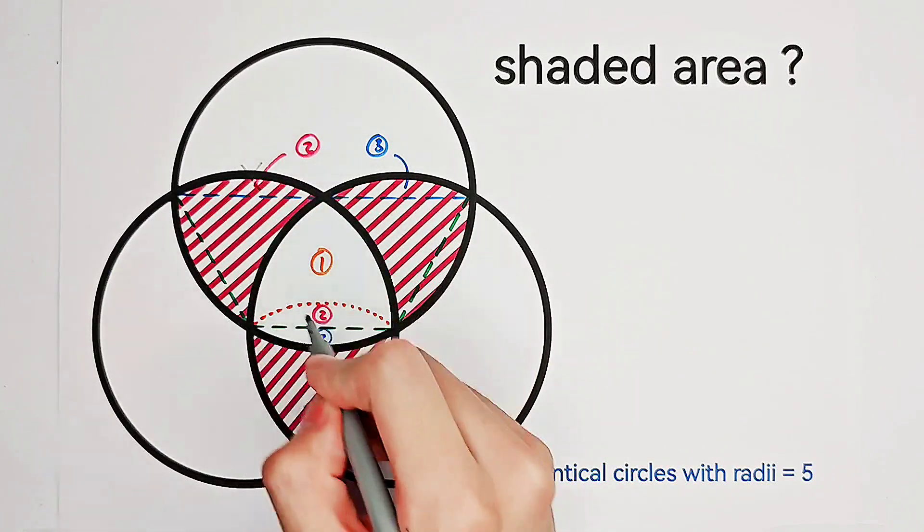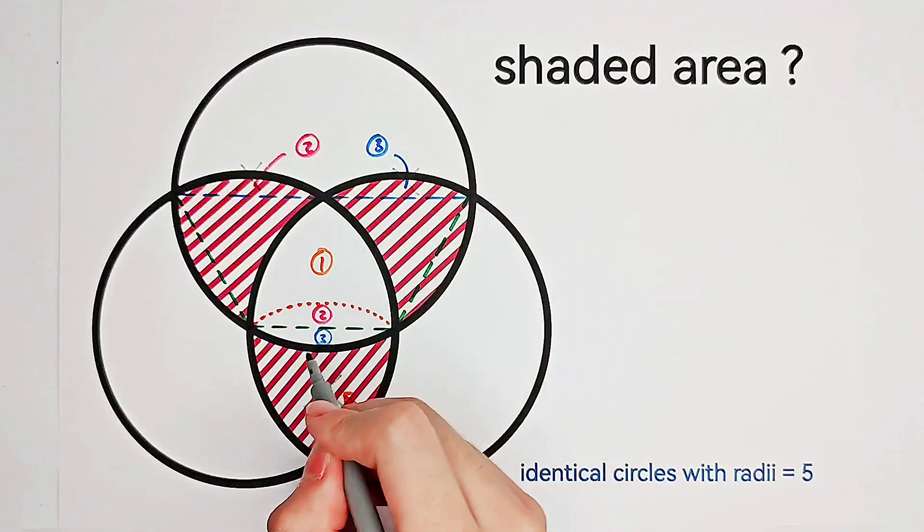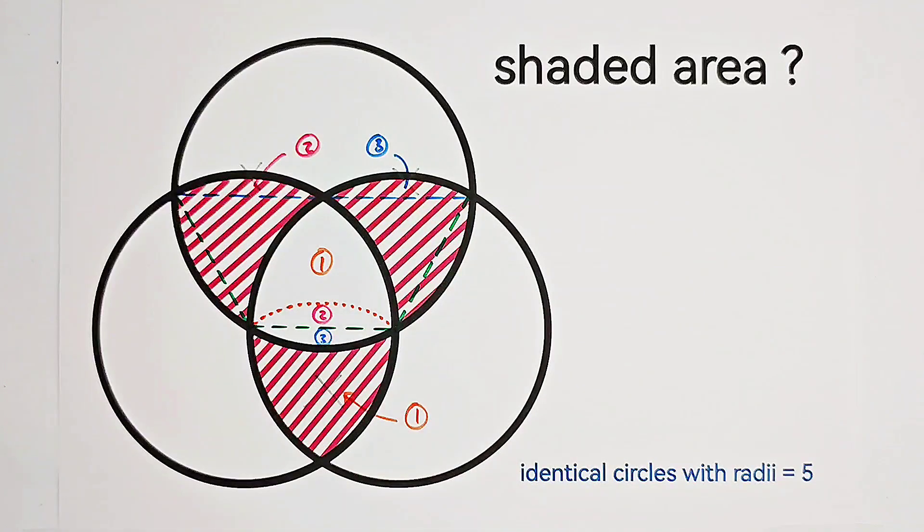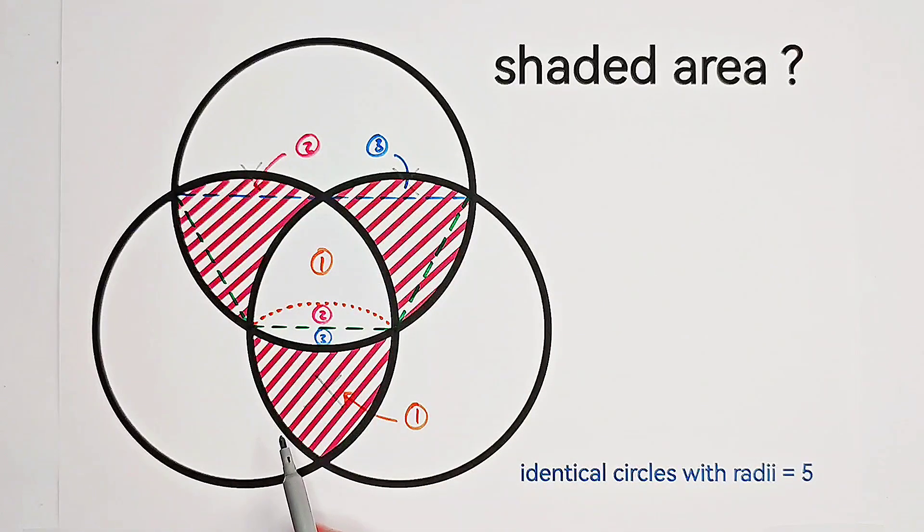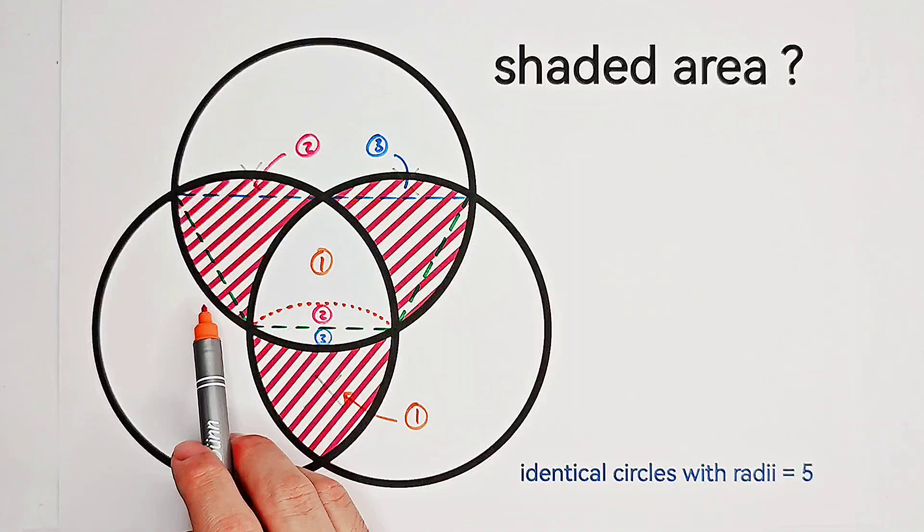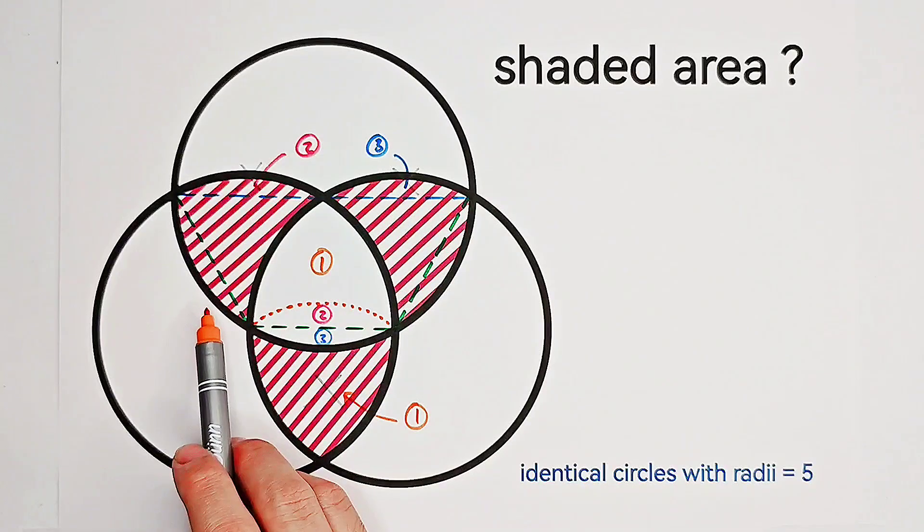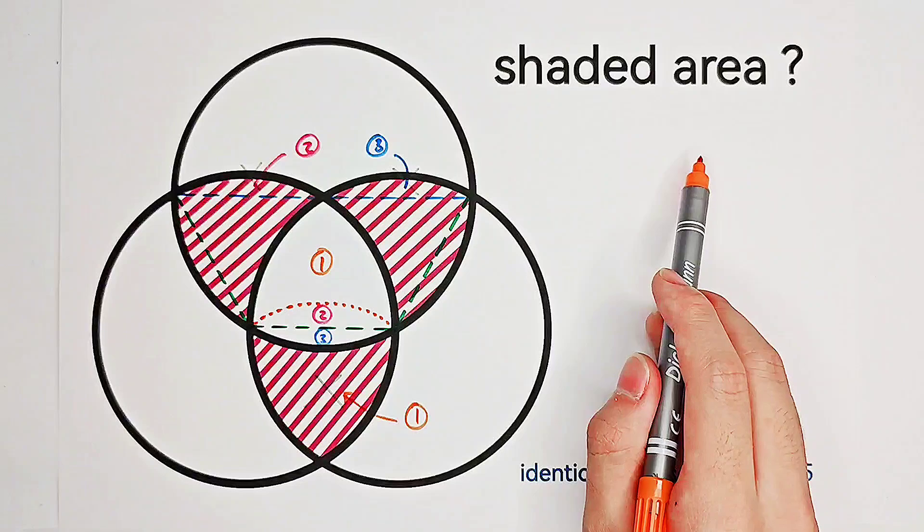We cut this area and paste it to here. We cut this area and paste it to here. So now, these three parts don't exist anymore. So now, we only have a very single shape, and it has the same area as our original shaded area.